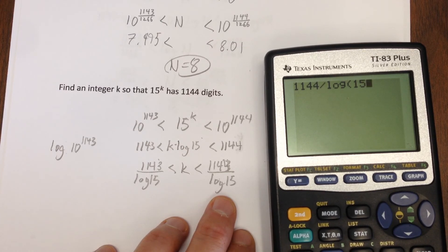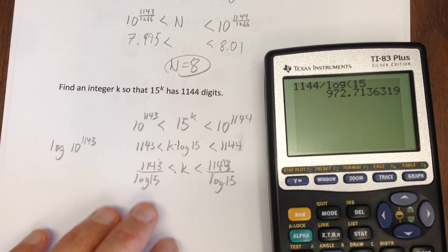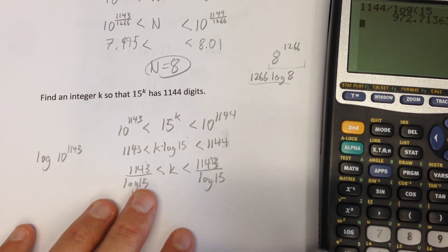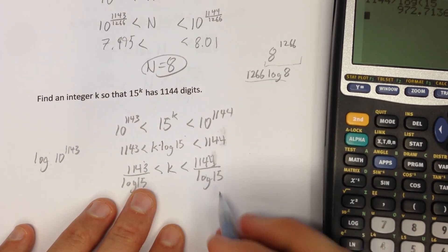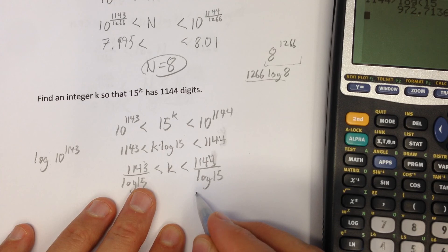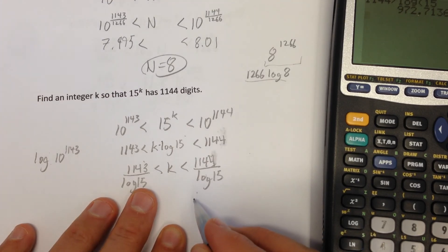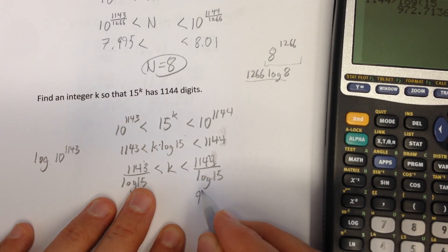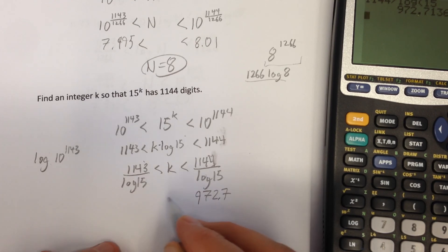So let's see what I need to do here, I need to do 1144 divided by log 15, that's, so I'll try to clean that up just a touch here, that's, let's see what that number was, that was 972.7, okay?